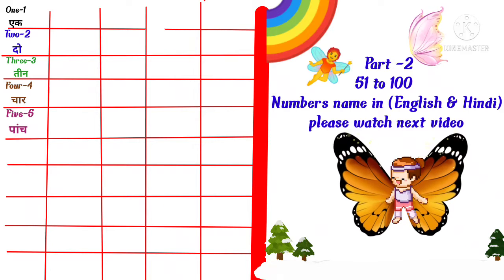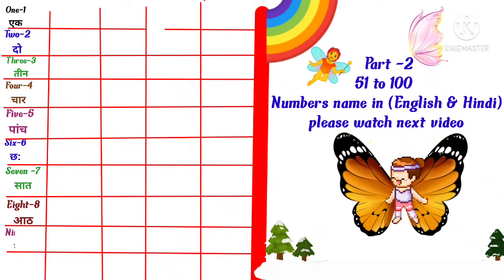S-I-X, 6 means six. S-E-V-E-N, 7 means seven. E-I-G-H-T, 8 means eight. N-I-N-E, 9 means nine.